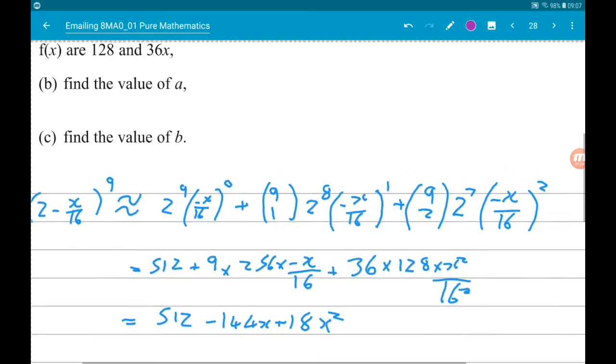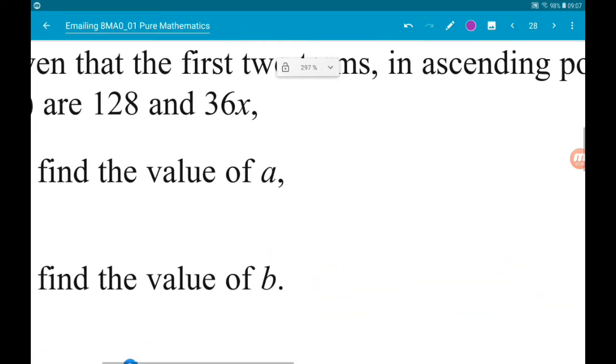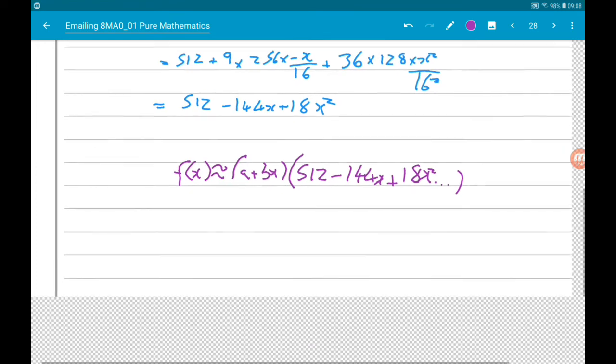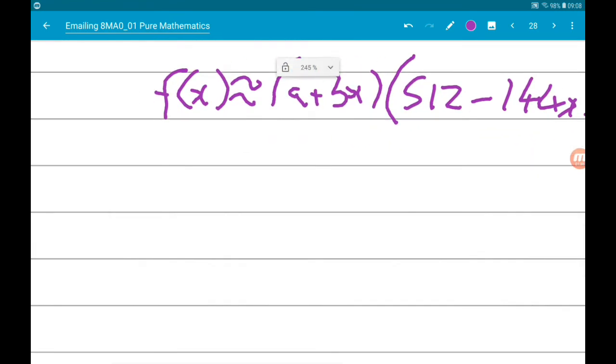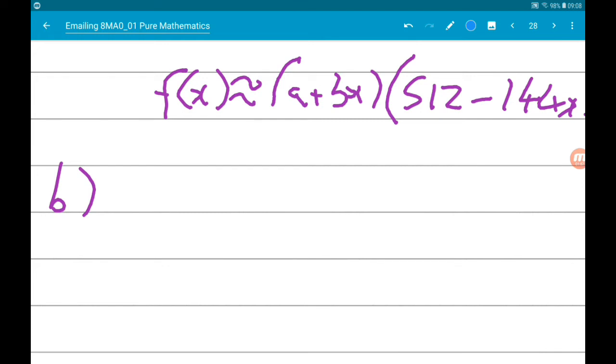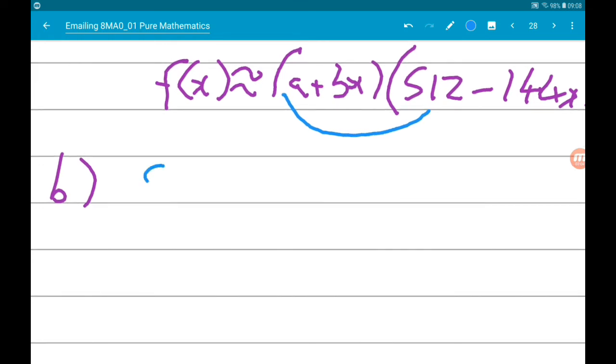So part b wants to find the value of a. Now we know that the constant term in the expansion is 128. The only constant term that we are going to get is going to come from a times 512. So, we know that 512a has to be 128. Dividing by 512 tells us then that a is equal to 128 over 512, which is one quarter.